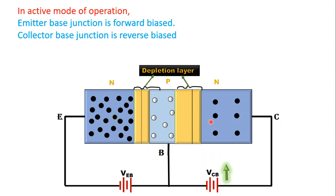Reverse biased collector-base junction means the N side of the transistor is connected to the positive terminal of the battery and the P side to the negative terminal. Similarly, forward biased emitter-base junction means the N side is connected to the negative terminal and the P side to the positive terminal. As we can see in this diagram, due to the diffusion process, two depletion layers are already formed at the emitter-base junction and the collector-base junction.